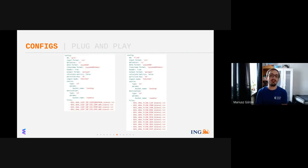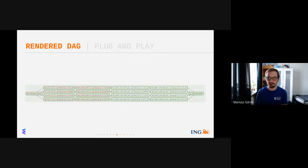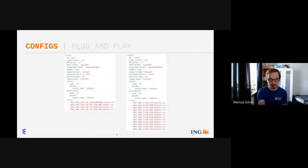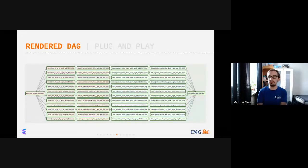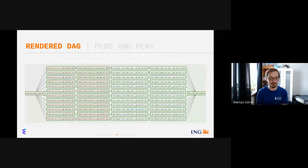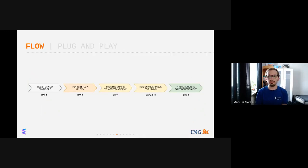Adding a new config to our DAGs repository means we have a new DAG in Airflow. You can see on this screen that the first example has four parallel streams — because the previous config had four files. The second DAG has over ten parallel processes because there will be ten tables ingested. It doesn't require any coding — just add a new YAML configuration file.